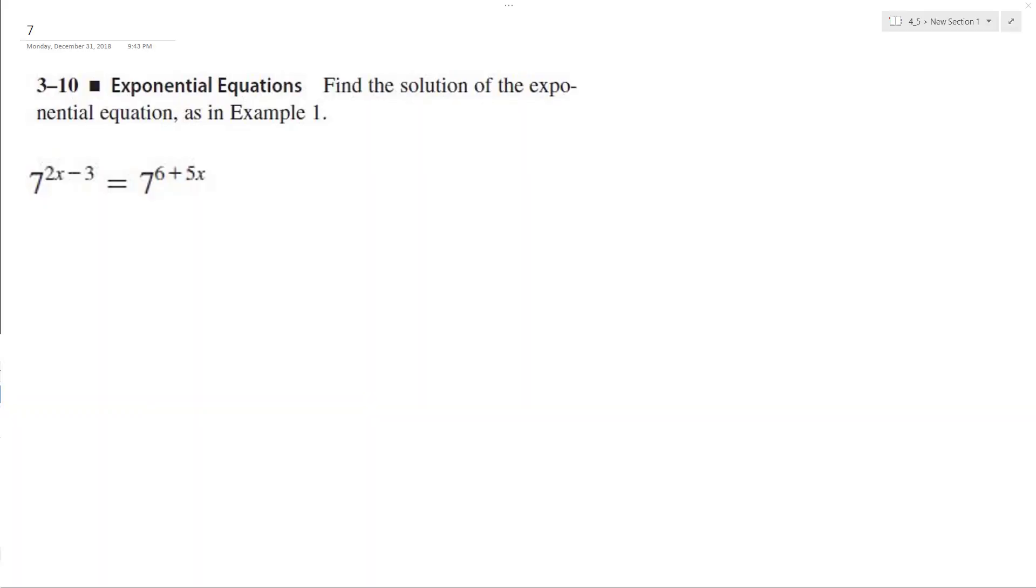We want to solve for x in this problem, so what we do is we drop the bases. We end up with 2x minus 3 equals 6 plus 5x.